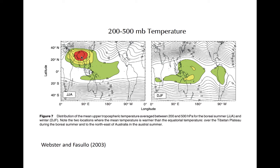During boreal winter, the highest temperatures are located over the maritime continent. Therefore, the winter monsoon has essentially an opposite sign to structure in terms of circulation and rainfall — it would be dry over the Southeast Asian continent and moist over the maritime continent.